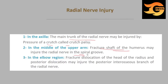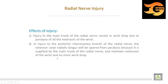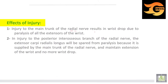At the elbow region, fracture-dislocation of the head of the radius or posterior dislocation may injure the posterior interosseous branch of the radial nerve. Injury to the main trunk of the radial nerve results in wrist drop due to paralysis of all extensors of the wrist.